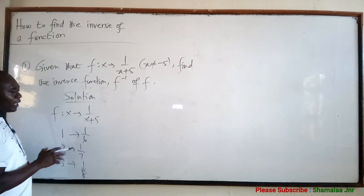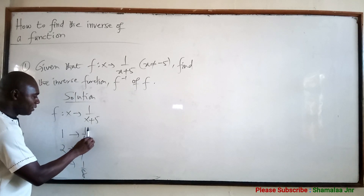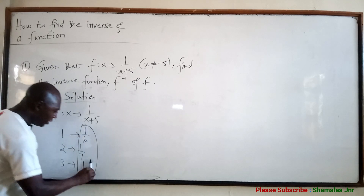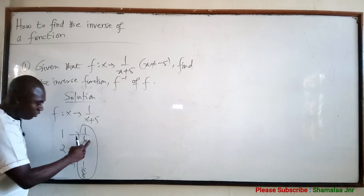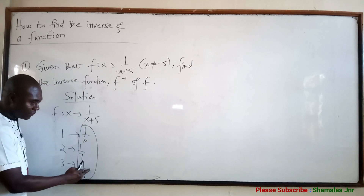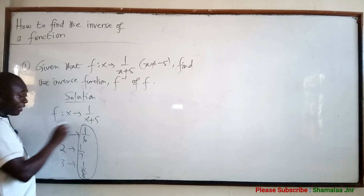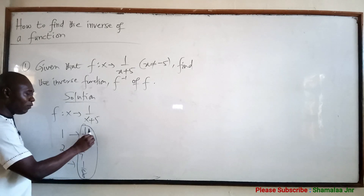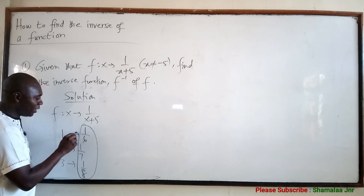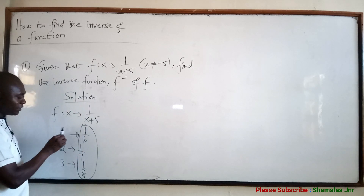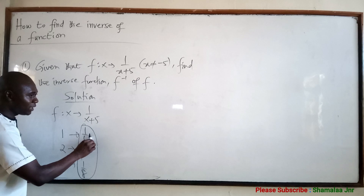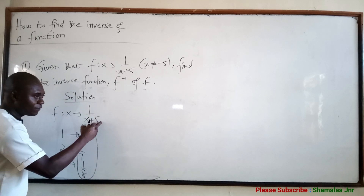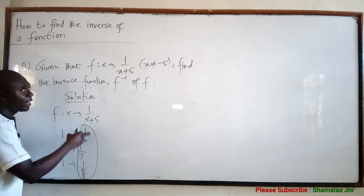So you want to get the function that can help us to get back to the original elements. These are the images of the elements: the image of 1 is 1 over 6, the image of 2 is 1 over 7, and the image of 3 is 1 over 8. So when you are here at the image side and you want to come back, how do you go back? There is a need to get a function that can help us to get back to these elements — and that is the inverse function.